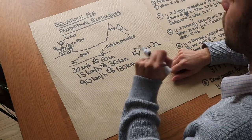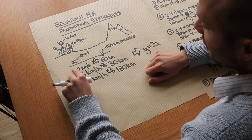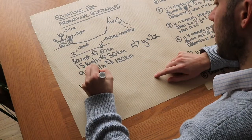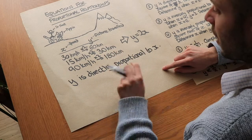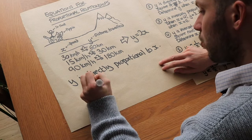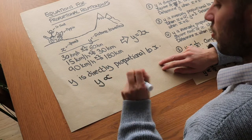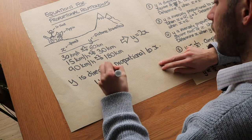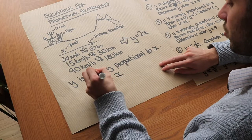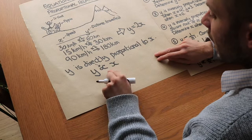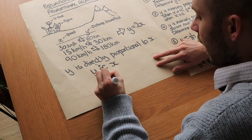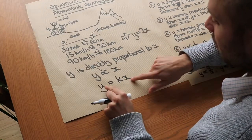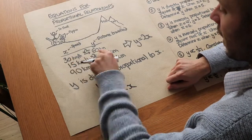Remember from previous videos: if two quantities are directly proportional to each other, if you triple one value you also triple the other. We say y is proportional to x, written with a symbol that looks a bit like the Greek letter alpha — kind of like a fishy symbol — so y is directly proportional to x. When that happens you can always write y as some number times x. In this case that number was 2, and in general there is some scale factor between x and y.